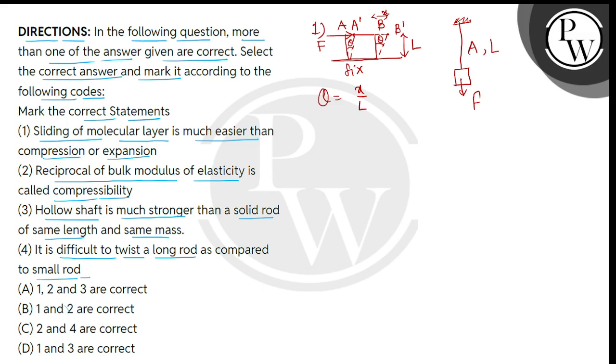But jab hum extension ya compression ki baad karayengi jis mein extension means wire ki length increase ho jayegi compression means wire ki length short ho jayegi force laghani ke baad. Toh yaha par humayin har layer ko is tarah se har area of cross section ko disturb karna padeha. Toh we can see that sliding is much easier. Therefore, statement number 1 is correct.